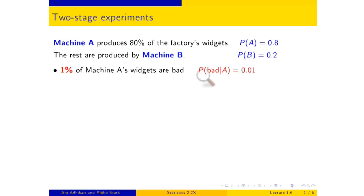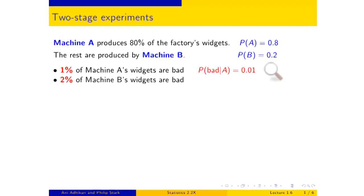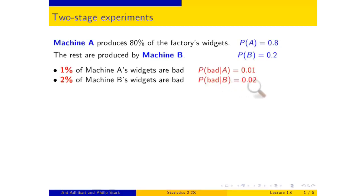So in the language of probability, the probability that a randomly picked widget is bad given that it came from machine A is 0.01. Machine B messes up as well — in fact, worse: two percent of its widgets are bad. So the probability that a randomly picked widget is bad given that it came from machine B is two percent.